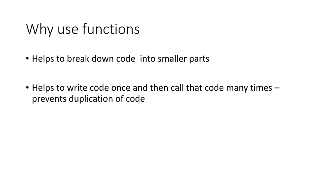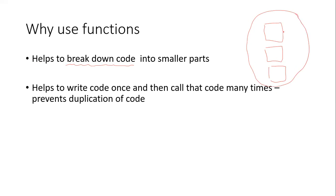So we know what a procedure or a function is — it's a block of code. Why would we want to use a block of code? Well, one reason is it helps us to break down our code. Sometimes when we're writing programs, our programs can become very large, but by writing functions it helps us break up our code into smaller parts, which becomes a lot easier to work with as opposed to looking at the program as one big whole.